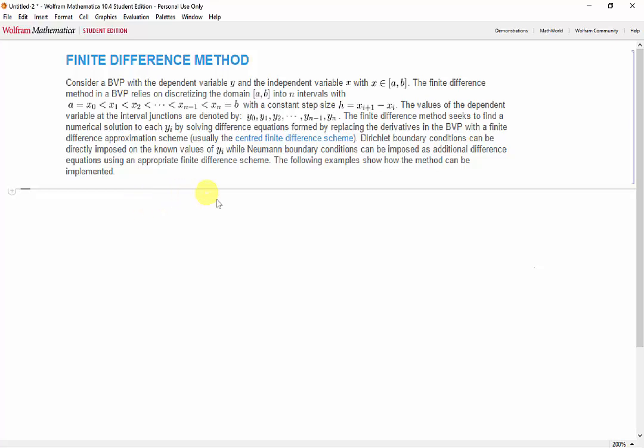Now let's try finding the exact answer of the BVP we described last time. That's u double prime plus u prime plus u equals 1 with the boundary conditions u of 0 equal to 1.5 and u of 3 equal to 2.5.